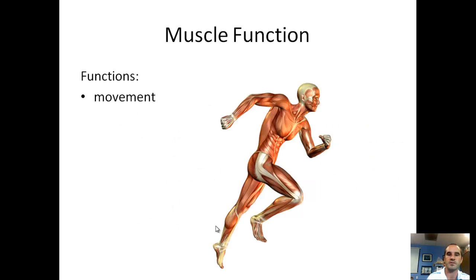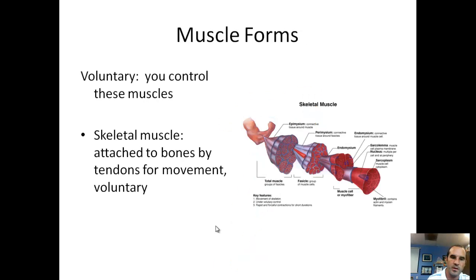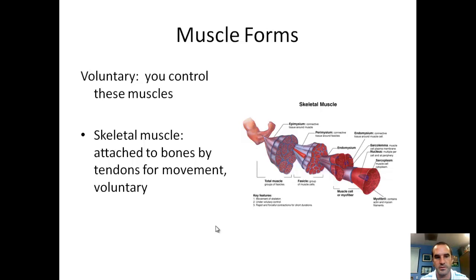Now we're going to look at muscle. Muscle functions in movement — we've got a runner with all of the muscles visible. There are two types of muscle: voluntary and involuntary. We'll start with voluntary muscles — these are the ones that you can control, any of your skeletal muscles.